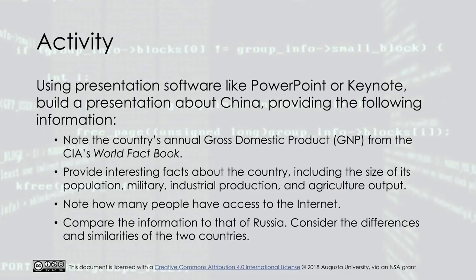The activity for this module asks that, using presentation software like PowerPoint or Keynote, you build a presentation about China providing the following information: note the country's annual gross domestic product from the CIA's World Factbook; provide interesting facts about the country including the size of its population, military, industrial production, and agriculture output; note how many people have access to the internet; and compare the information to that of Russia, considering the differences and similarities of the two countries.